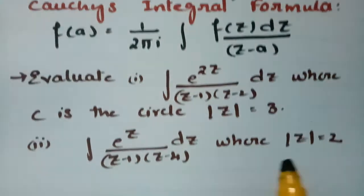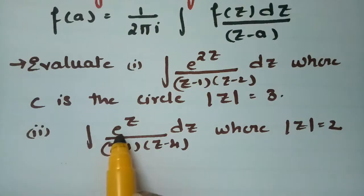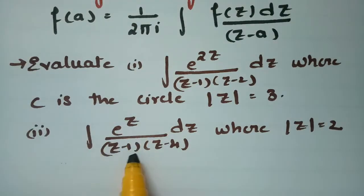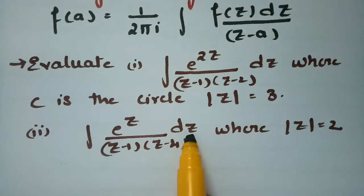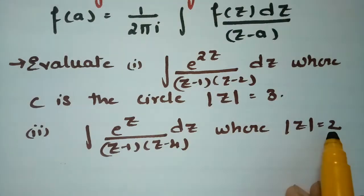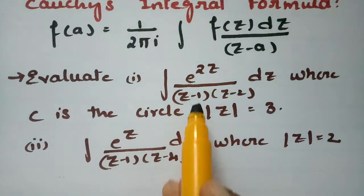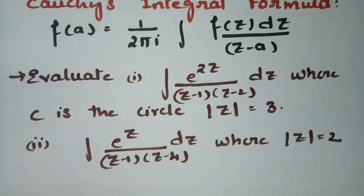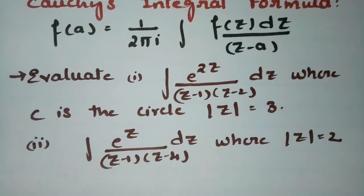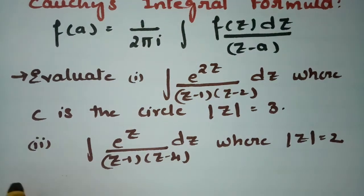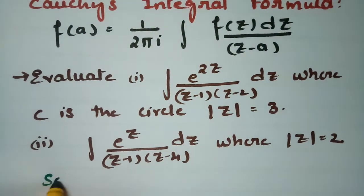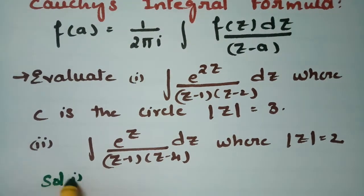The second question is: evaluate the integral of e^z / [(z-1)(z-4)] dz, where |z| = 2. First, I am going to give the solution for problem 1.